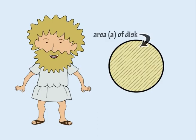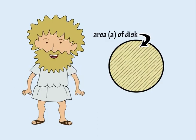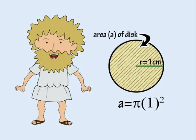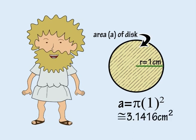The area enclosed by a circle or disk is pi r squared where r is the radius. So a circle with a diameter of 2 centimetres has an area of pi times 1 squared or approximately 3.1416 square centimetres.